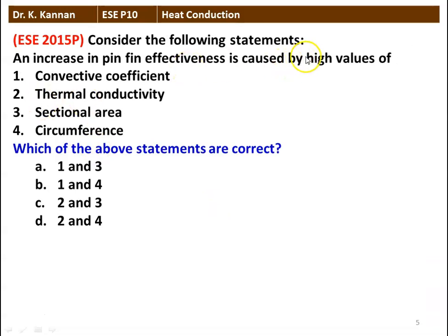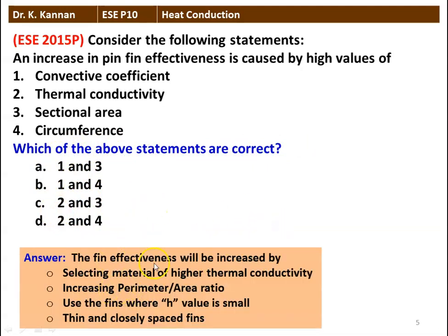Next question: Consider the following statements — an increase in pin fin effectiveness is caused by (1) high values of convective coefficient, (2) high thermal conductivity, (3) high sectional area, (4) high circumference. Which are correct? Fin effectiveness is increased by selecting material of high thermal conductivity, increasing the perimeter-to-area ratio, using fins where H is small, and using thin and closely spaced fins. The correct answer is 2 and 4 — thermal conductivity and circumference.